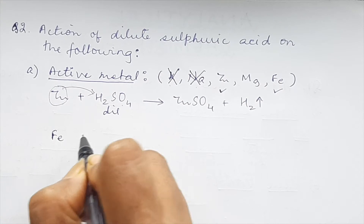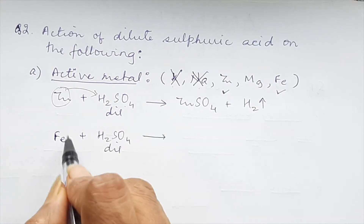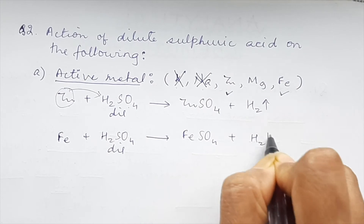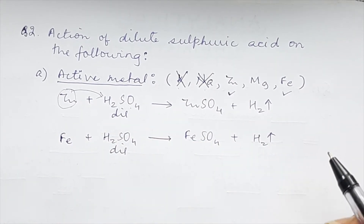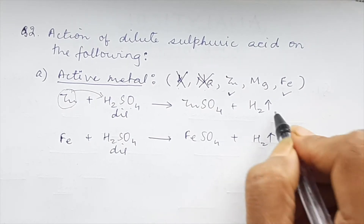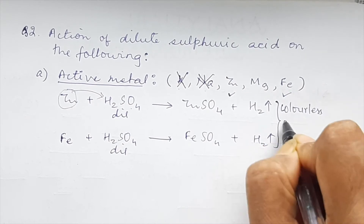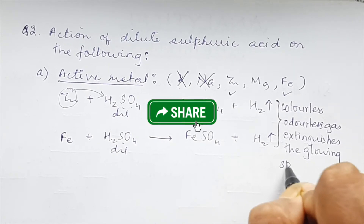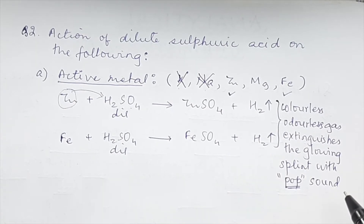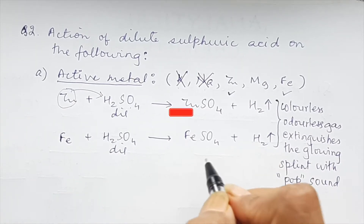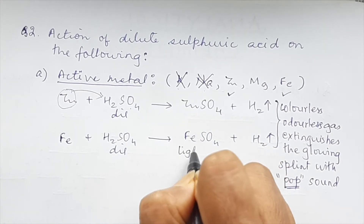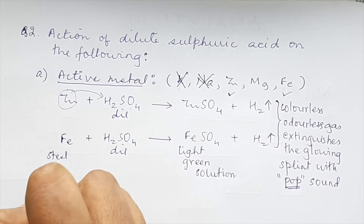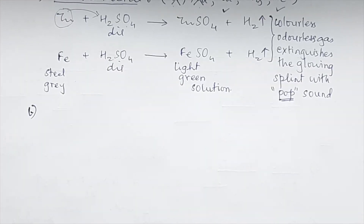For iron: Fe + H₂SO₄ (dilute) → FeSO₄ + H₂↑. Iron displaces hydrogen from the acid. The gas liberated is hydrogen — colorless odorless gas which extinguishes a glowing splint with a characteristic pop sound. FeSO₄ has color, so write: light green solution of FeSO₄ is formed, and steel gray or blackish gray iron metal reacts.